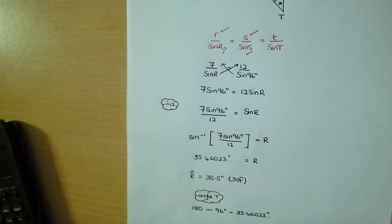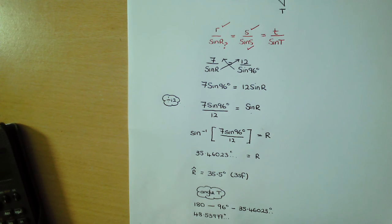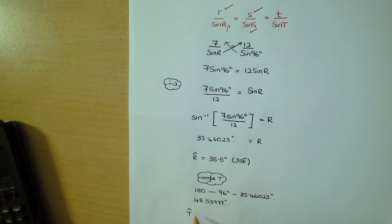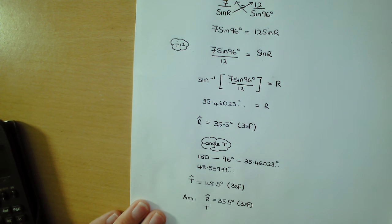So we go back to our calculator. That's going to give us 48.53977. Then we'll round our answer. So that means that angle T is 48.5 degrees to 3 significant figures. And then we can group our answers together. So at the very end, angle R is 35.5 degrees to 3SF, and angle T is 48.5 degrees to 3SF.